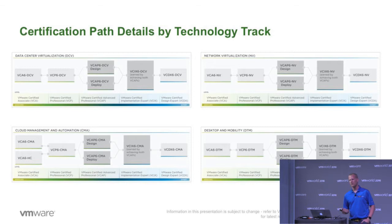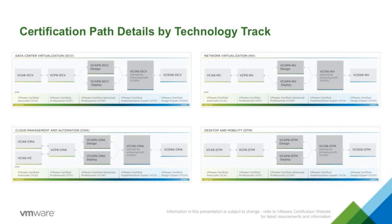Let's take a look at our certification paths. We've got data center virtualization, cloud management and automation, network virtualization, and desktop and mobility. Each one of these is currently set up with the same track. You have your VCA exam — your VMware Certified Associate — which is an online unproctored exam that you can take at home anytime you want.